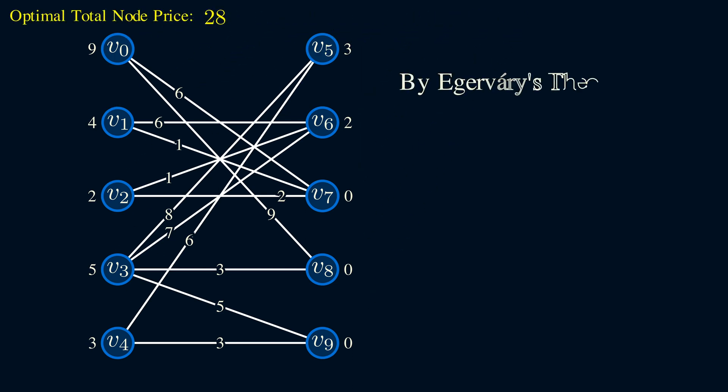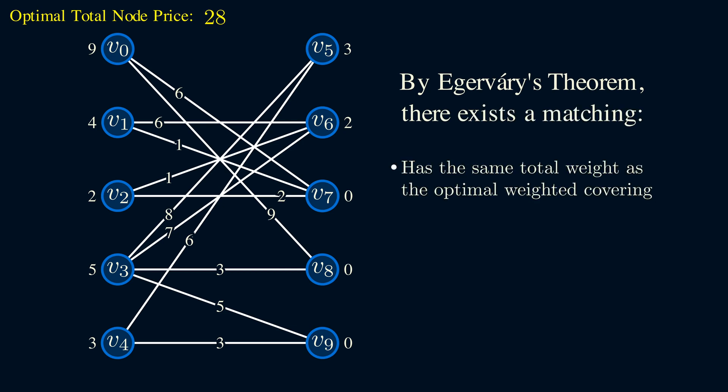Here are the optimal prices for this graph. The sum of all of these prices is 28. Now, Egerváry's theorem tells us that there exists a matching with the same weight as these nodes, so there is a matching with a weight of 28. For the matching to have the same weight, it would have to match every vertex in the graph. And it can also only contain edges whose weights are equal to the prices of its endpoints. Maybe pause here and understand why the last two bullet points have to follow. If either of these conditions is not true, then we'll have a matching with a weight smaller than the optimal weighted covering, so that can't happen.